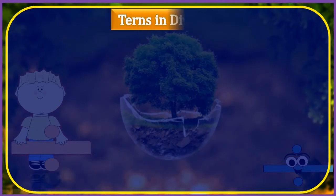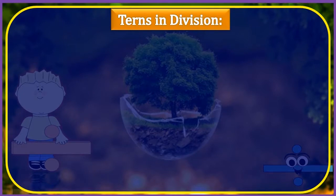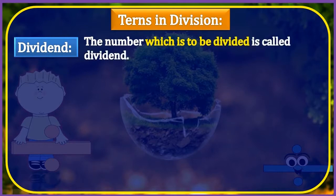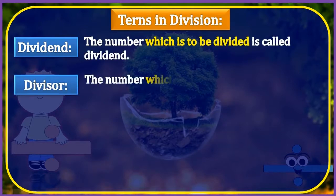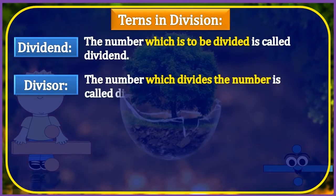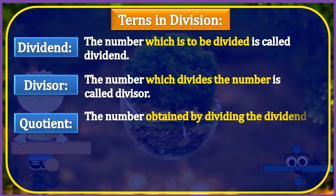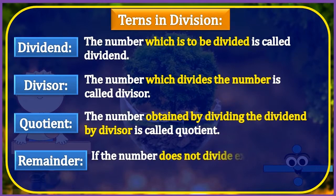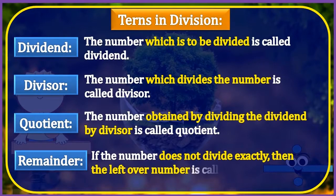Terms in division. There are mainly four terms used in division. They are dividend, the number which is to be divided. Divisor, the number which divides the number. Quotient, the number obtained by dividing the dividend by divisor. Remainder, if the number does not divide exactly, then the leftover number is called remainder.